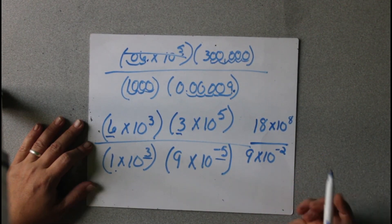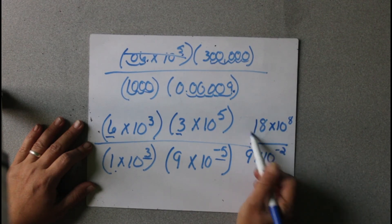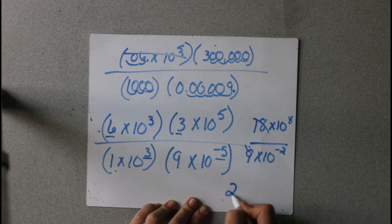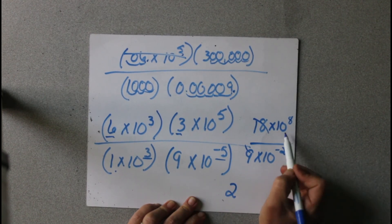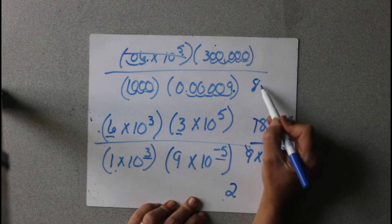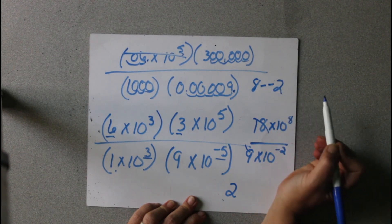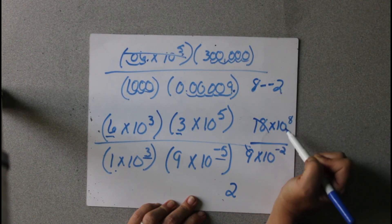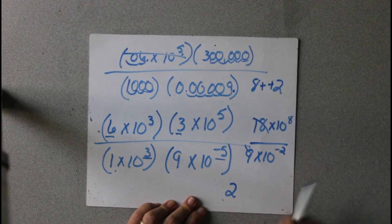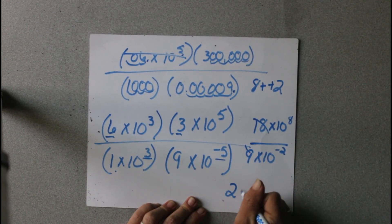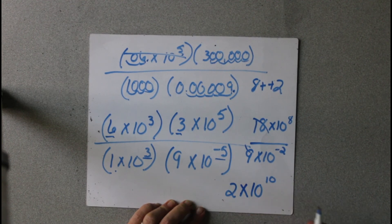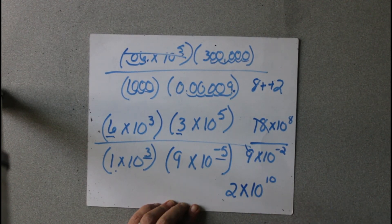Now to divide: 18 divided by 9 gives 2. And when we divide here, we subtract exponents: 8 minus negative 2 is the same as 8 plus 2, which is 10. So 2 times 10 to the 10th.